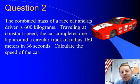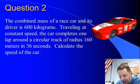In this problem, the combined mass of a race car and its driver is 600 kilograms. Traveling at constant speed, the car completes one lap around a circular track of radius 160 meters in 36 seconds. Calculate the speed of the car. Yeah, that's kind of a light car, but alright, we'll do the problem.